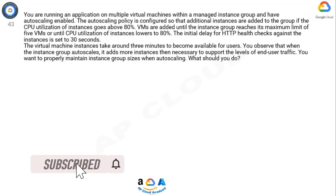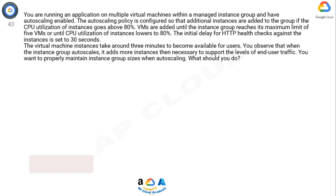Question. You are running an application on multiple virtual machines within a managed instance group and have autoscaling enabled. The autoscaling policy is configured so that additional instances are added to the group if the CPU utilization of instances goes above 80%. VMs are added until the instance group reaches its maximum limit of 5 VMs or until CPU utilization lowers to 80%. The initial delay for HTTP health checks against the instances is set to 30 seconds. The virtual machine instances take around 3 minutes to become available for users.